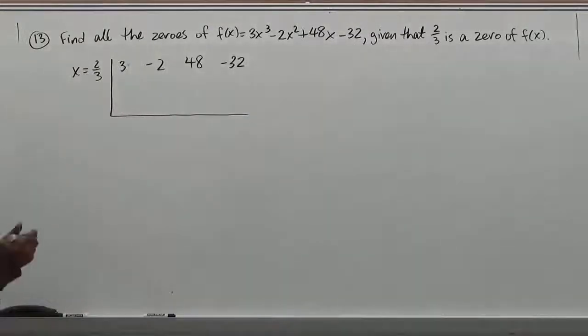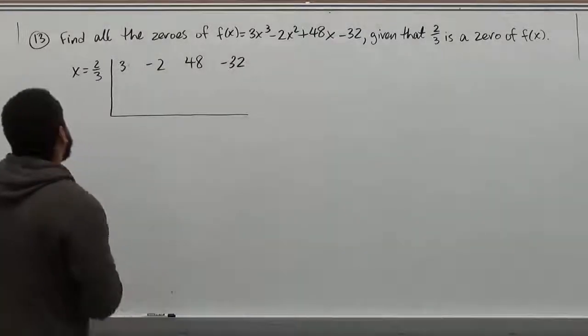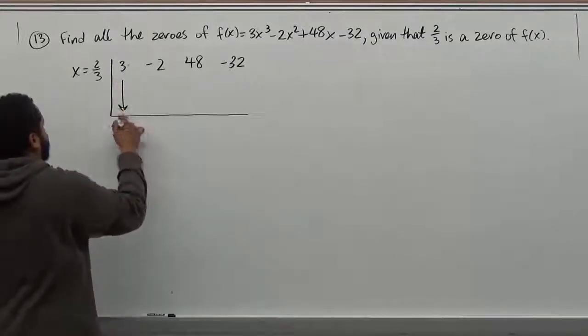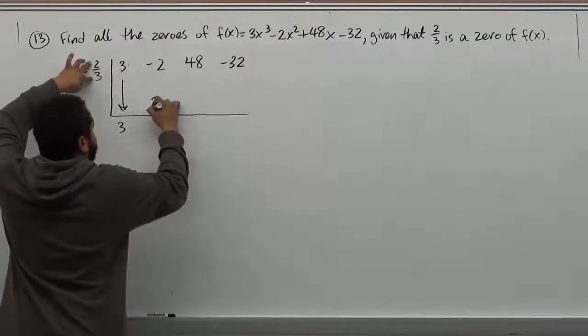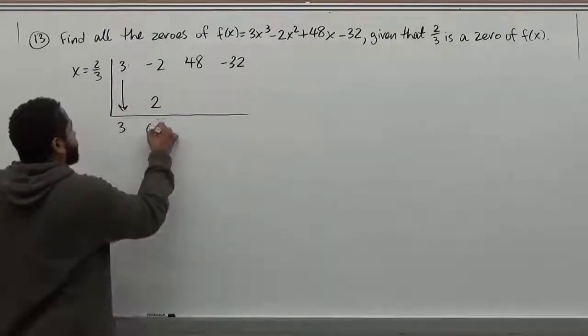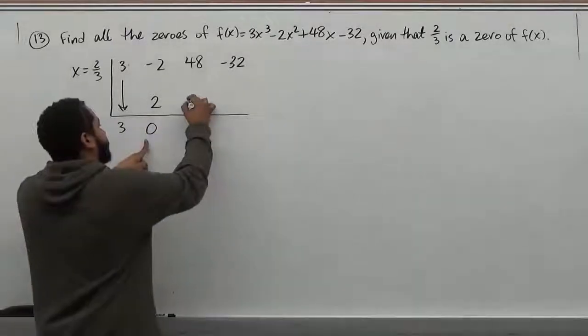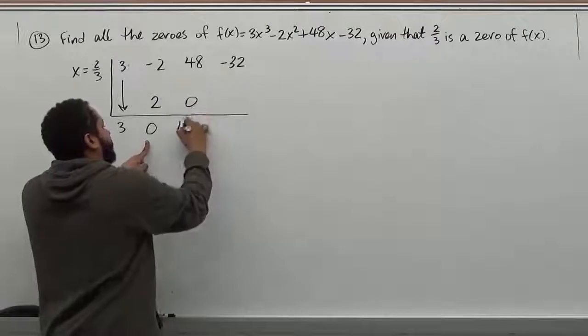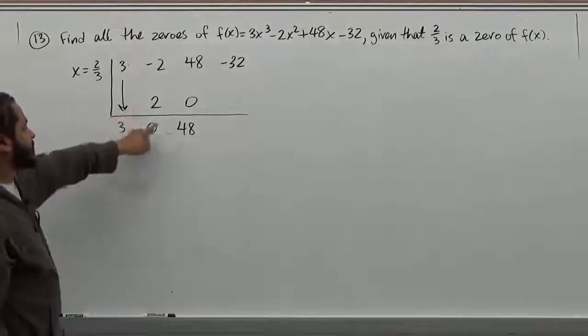So we're going to use the synthetic rule to do this to prove that it's a zero and see what's left over so we can solve the rest of whatever's left over. So the first term comes straight down. That gives us a 3. We multiply 2/3 times 3 and we get positive 2. Now when we add these we get a 0. So 0 times 2/3 is also 0.